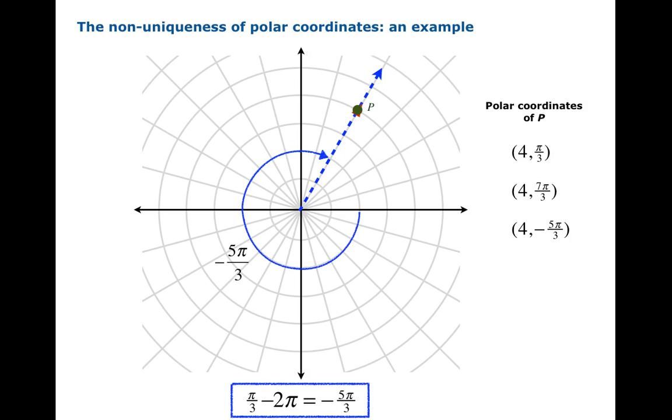These polar coordinates give you the same point. And actually, we can actually be a little more creative about this. What if we point in the opposite direction, and instead of marching four units out in this direction, we march four units backwards, which would sort of naturally be represented by a negative r coordinate. So (-4, 4π/3) also gives us the same point P.